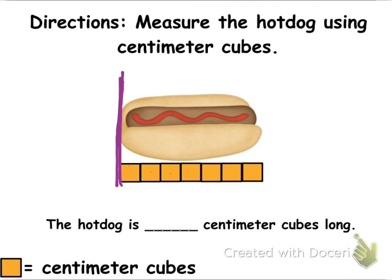1, 2, 3, 4, 5, 6, and 7. Because if you look, it's almost the whole thing. So, we're going to say 7, because it's more than half that other centimeter cube. So, the hot dog is 7 centimeter cubes long.